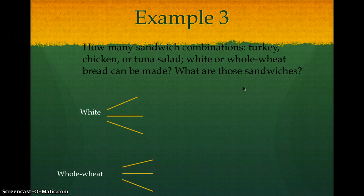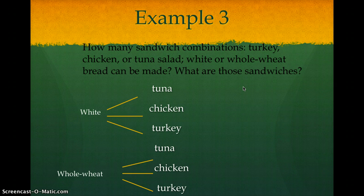So you have white or whole wheat bread as your two options of the breads. And then I could have white with tuna, white with chicken, white with turkey. Or I could have whole wheat with tuna, whole wheat with chicken, or whole wheat with turkey.